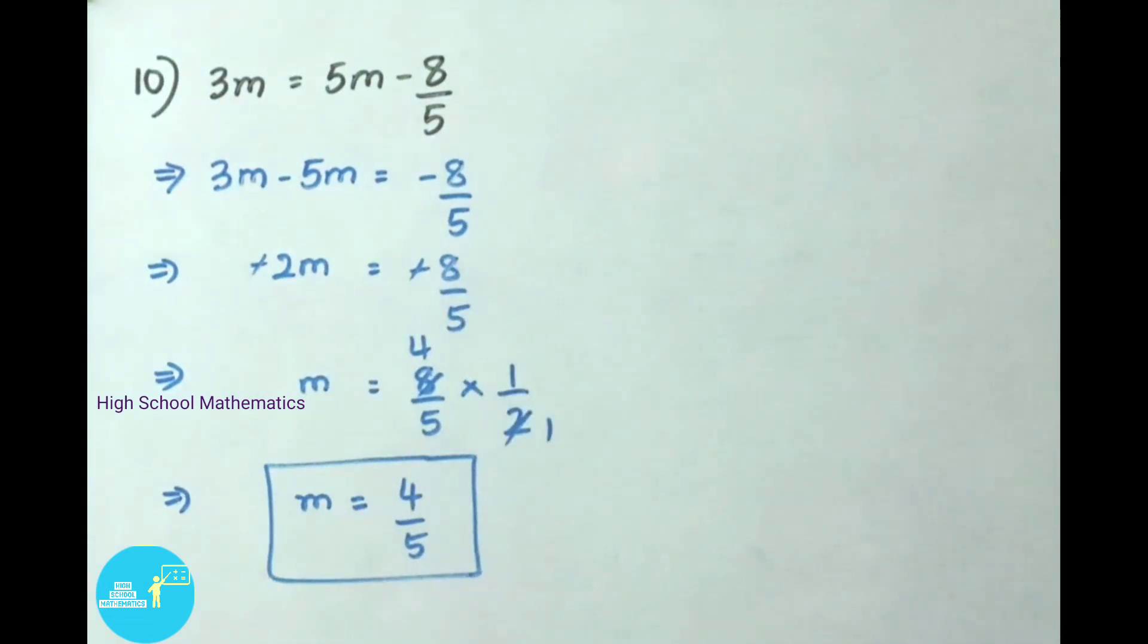Both sides minus minus will be cancelled. Now 2m equals 8 by 5. Here 2 is multiplying, on transposing it becomes reciprocal, that is 1 by 2. So m equals 8 by 5 into 1 by 2. 2 table: 2 ones are 2, 2 fours are 8. Therefore m equals multiply numerator 4 into 1, 4, by denominator multiply 5 into 1, 5. Therefore finally we got m value as 4 by 5.